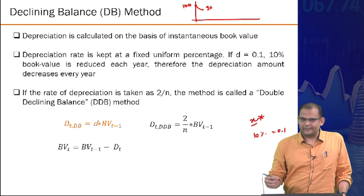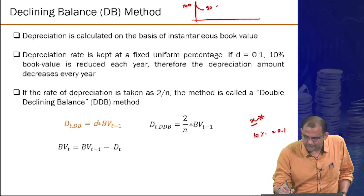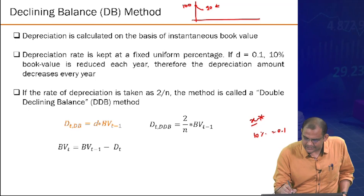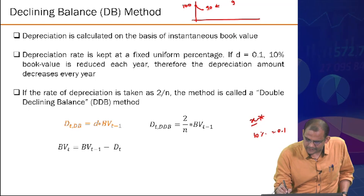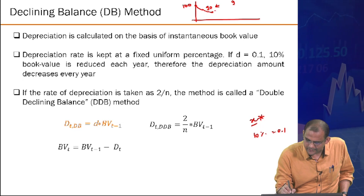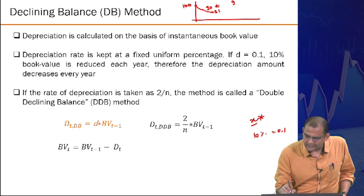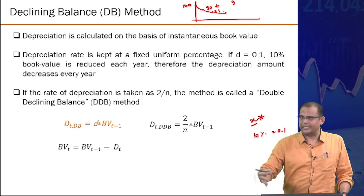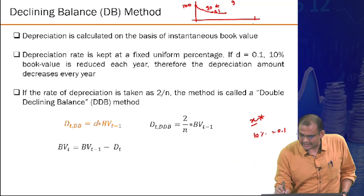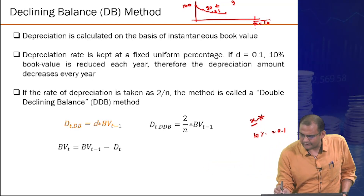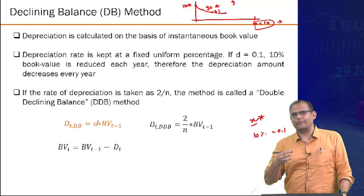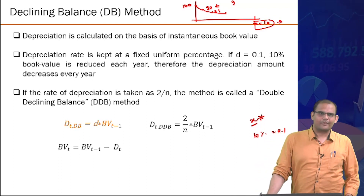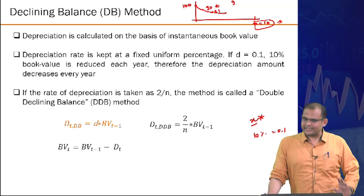Continuing the example: in year 2, depreciation is applied to the 90 remaining, giving 9, so book value becomes 81. Then 8.1 is deducted, and so on for however many periods you are allowed to depreciate the asset.